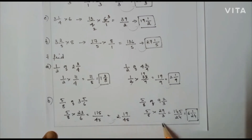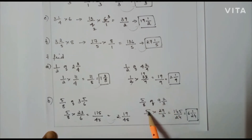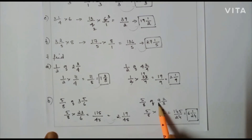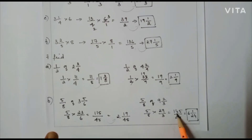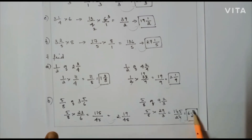Next case: 5/8 of 9(2/3). Convert: 3×9=27, plus 2 = 29/3. So 5/8 × 29/3. I can't cancel here. So 5 × 29 = 145, and 8 × 3 = 24, giving 145/24. Converting to a mixed fraction gives 6 and 1/24.